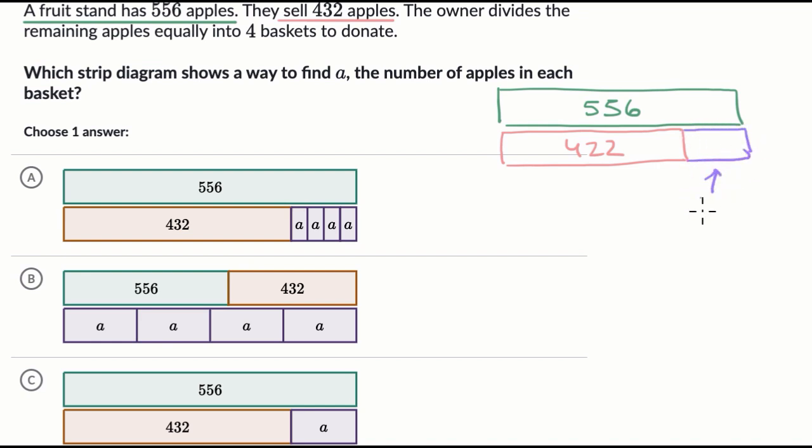Then there's going to be some left over after they sell that 432. This is the amount that's left. They divide the remaining apples equally into four baskets to donate. So we would divide this equally into four baskets. If A is the number in each basket, this would be A, this would be A, this would be A, and that would be A.